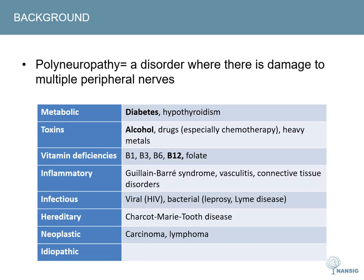A polyneuropathy is a disorder where there's damage to multiple peripheral nerves. There are a wide variety of causes, and it can be helpful to split these up into different categories as shown in this table. I've highlighted diabetes, alcohol and vitamin deficiencies as these are generally the most common causes seen in the developed world.